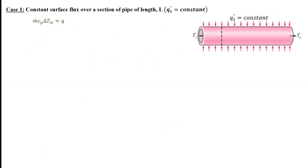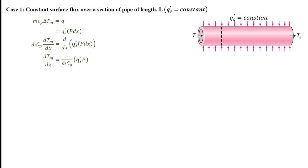Let's consider the special case of a constant surface heat flux over a section of the pipe — for example, if we had electrical heating across the pipe. We define the heat transfer rate as ṁCp times the change in mean temperature, and q in terms of the flux times the surface area, where the surface area is the perimeter times the change in x. Equating those two expressions and taking the derivative of each side with respect to x, the dx cancels out on the right, and dividing through by ṁCp gives an expression for dTm/dx.